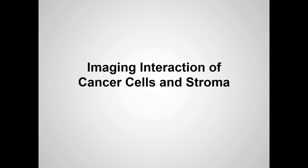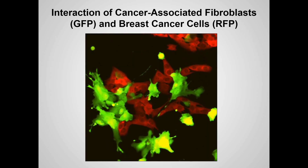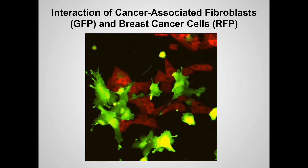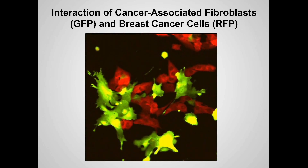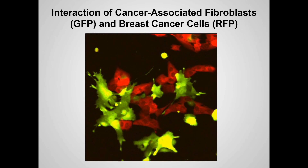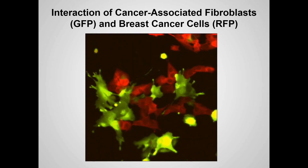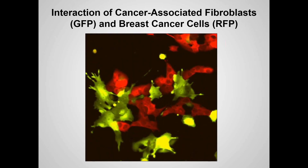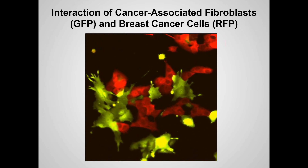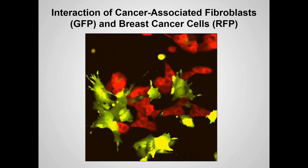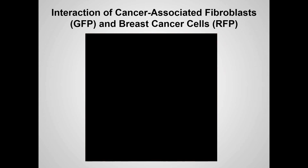Another important aspect of understanding how the stroma and cancer cells interact is found by imaging them. Here we have cancer-associated fibroblasts, which are very frequently found in tumors, labeled with GFP, and red fluorescent protein-expressing cancer cells. We can see how intimate their interaction is — this case is in vitro, but we get a good idea of how intimately these fibroblasts and cancer cells interact, obviously influencing one another.